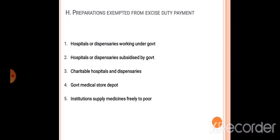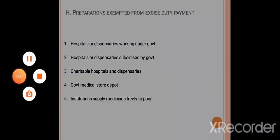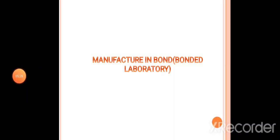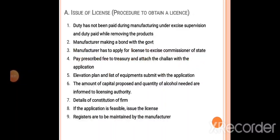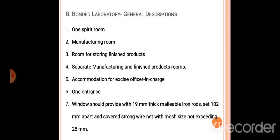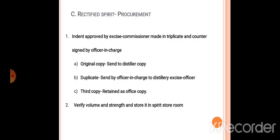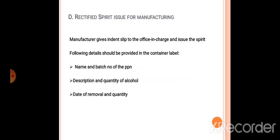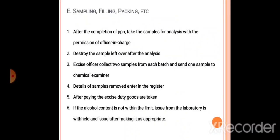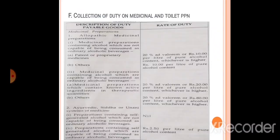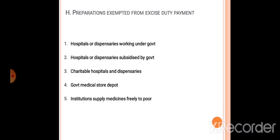We are required to do it in the laboratory. We were required to do it in the military. Then we are required to obtain the license in the manufacturing. For the general description, the rectified spirit is required. We have to limit the manufacturing, then sampling, filling, packing, and collection of duty. We collect from a lot of different institutions.